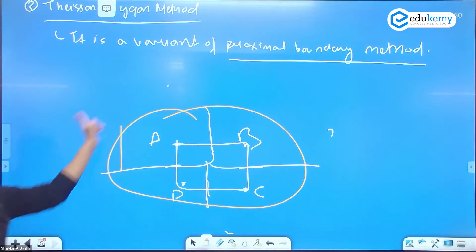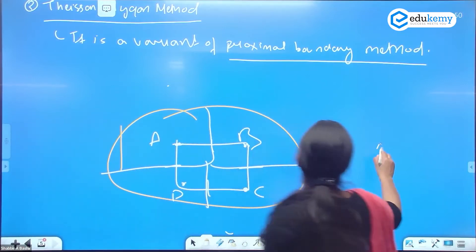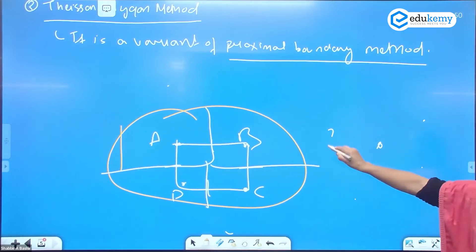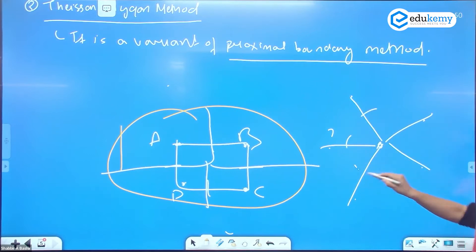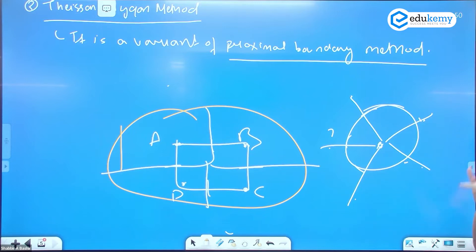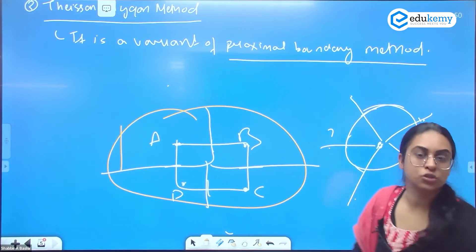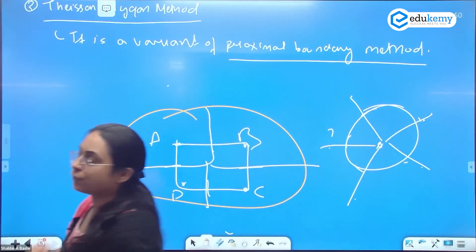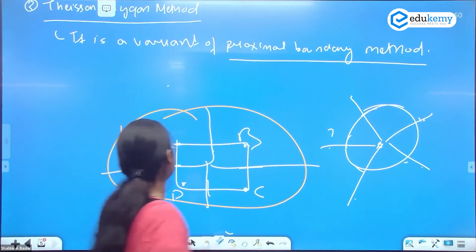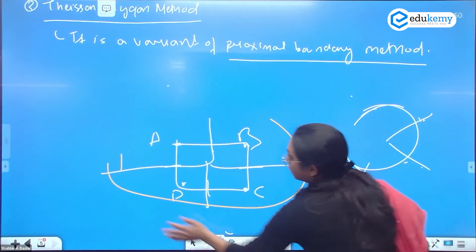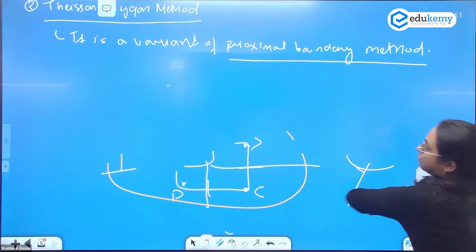In the proximal boundary method, there was no outer boundary and only one city was being connected to others to make the boundary. But in the Thiessen polygon method, it is the opposite — you already have a fixed pre-existing boundary and you use that boundary while demarcating the sphere of urban influence. This is why it is a variant of the proximal boundary method.